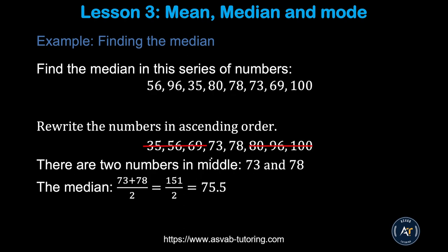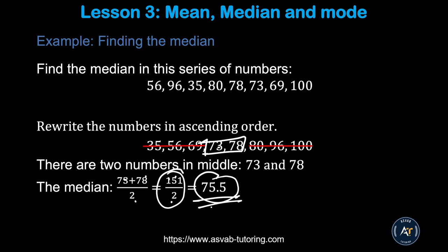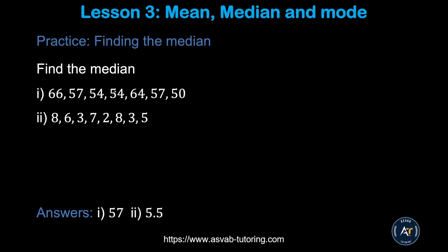However, if you have two middle numbers, what do you do? If you have two middle numbers after putting them in order, you add those numbers and divide by 2. In the middle, we have 78 and 73. So 78 plus 73 divided by 2 gives you 151 over 2, and if you divide that it gives you 75.5 — that is the median. Pause the video and try the practice problems by yourself; make sure you get those two answers.